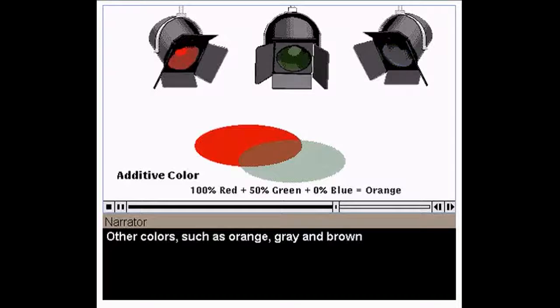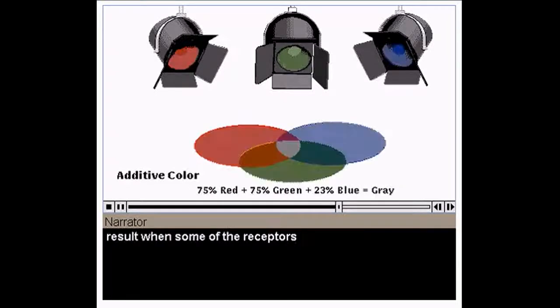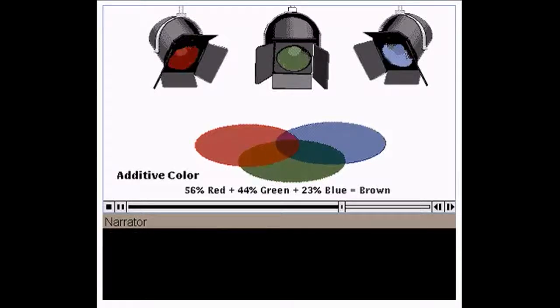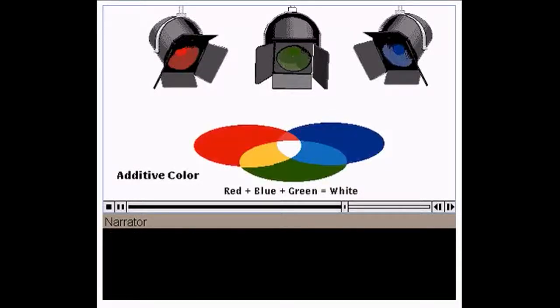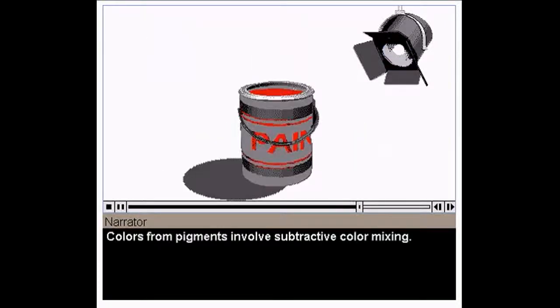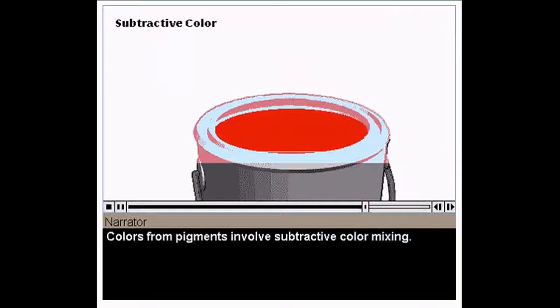Other colors, such as orange, gray, and brown, result when some of the receptors are only partially stimulated. When colors result from combining lights of different wavelengths, the process is known as additive color mixing. Colors from pigments involve subtractive color mixing.